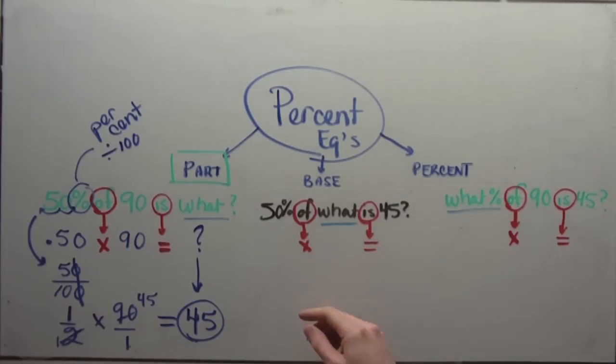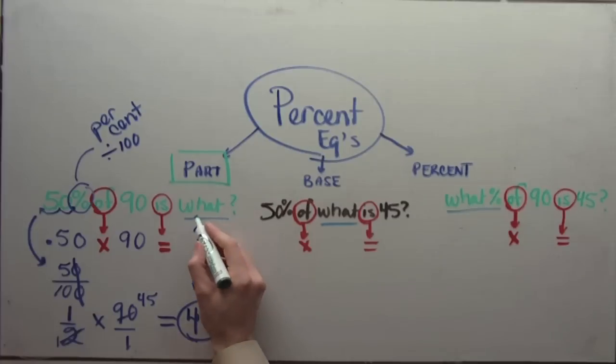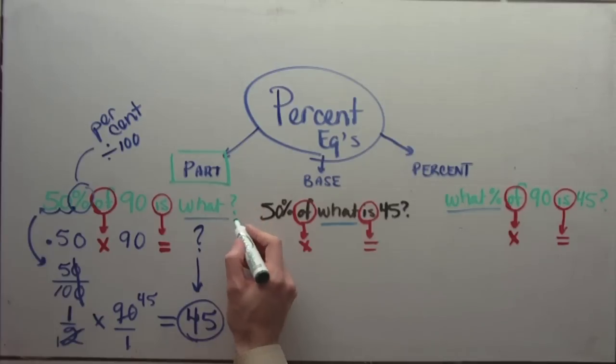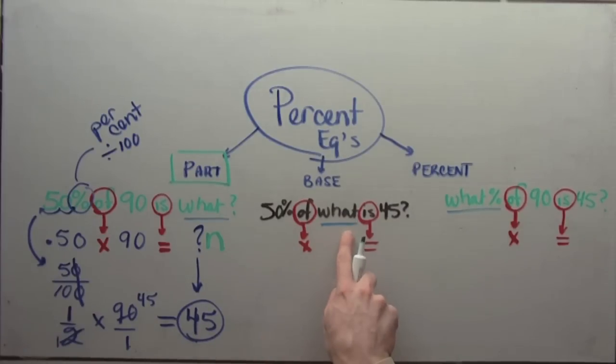When you start getting into something like base equations and percent equations, the literal percent that you're looking for, it's more algebraic. You really could have, and I always encourage people to do this, wherever you see a question of what number or what is something, or is what, you might use a letter. If you're looking for a number, it would reasonably be the letter N. So similarly here and here, 50% of what number literally is 45. You could simply say N to just fill that void. And also here.